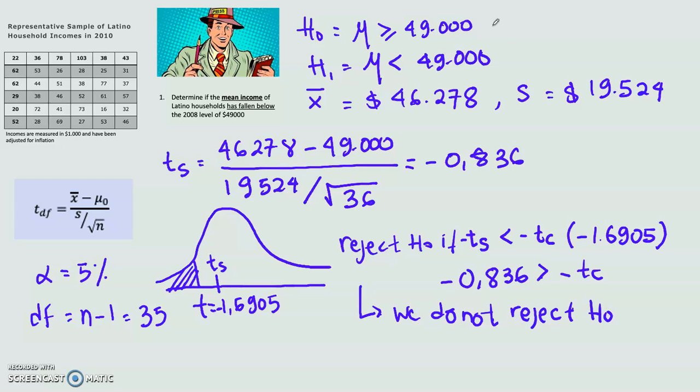So H null is true, while our statement was in H1. So if H null is true, H1 is not true, then this statement is false. We can say that it is not true that the mean income of Latino household has fallen below $49,000.